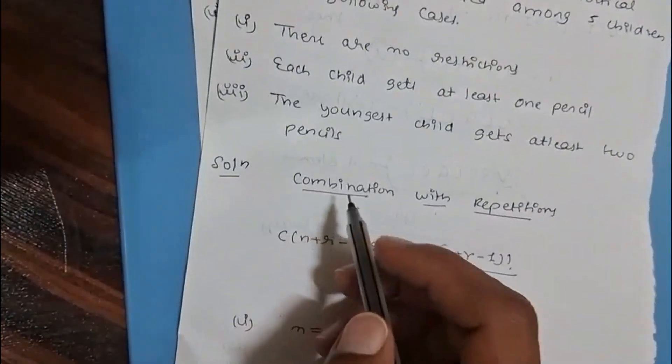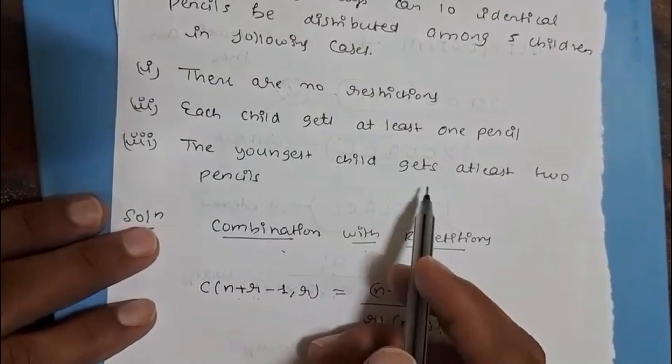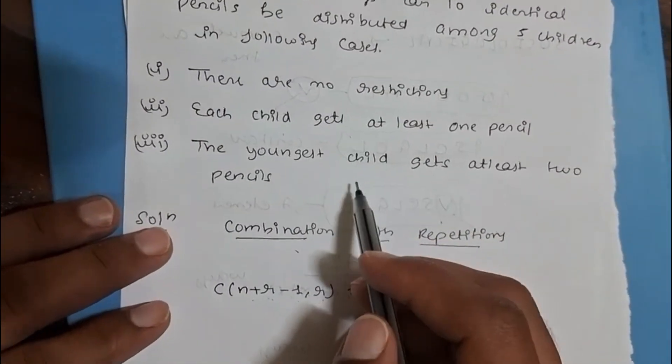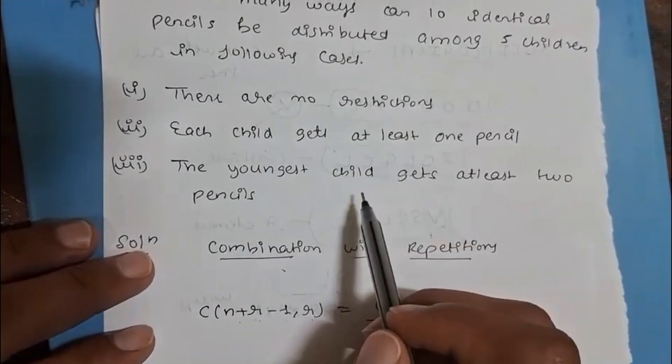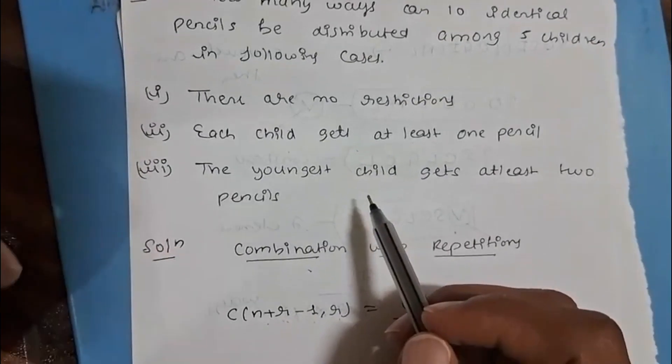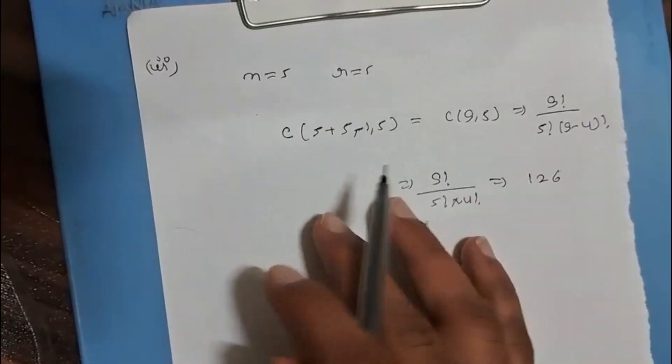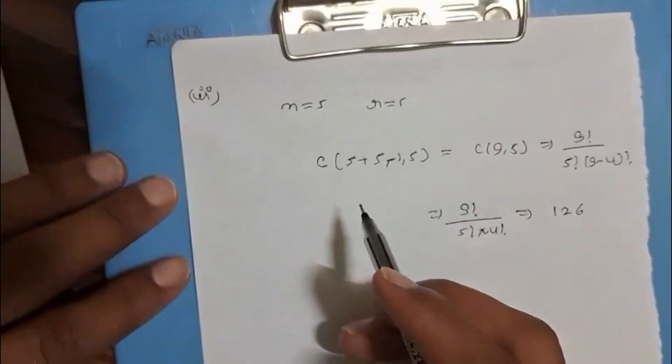In the third part, the youngest child gets at least two pencils. The youngest child gets at least two pencils means the youngest child gets one or more pencil. Here, in the third part, n = 5 and r = 8.